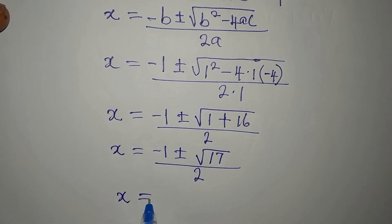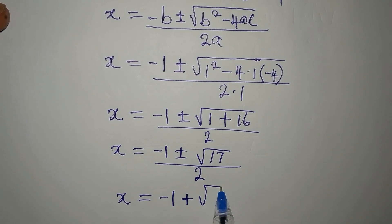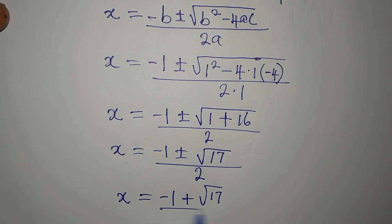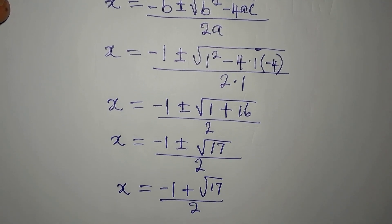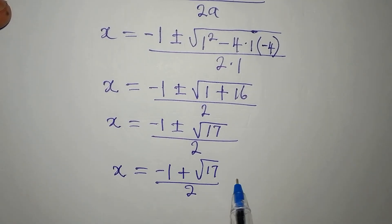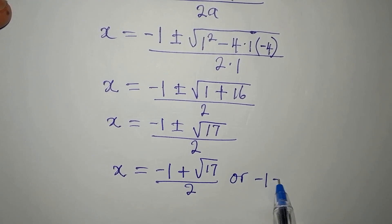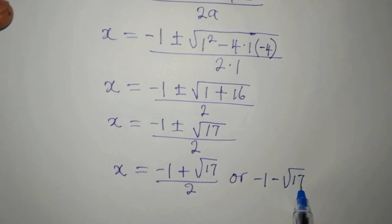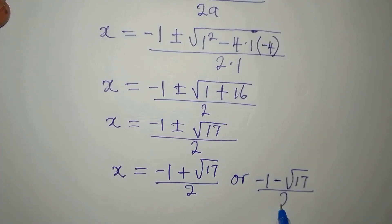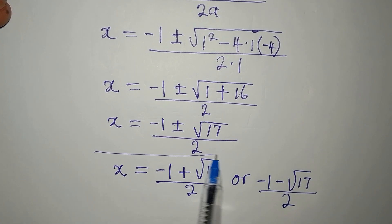Now, our x is going to be minus 1 plus square root of 17 over 2. I've picked the positive. Then I'll pick the negative here now. Or minus 1 minus the square root of 17 divided by 2. So from here, we already have two solutions.